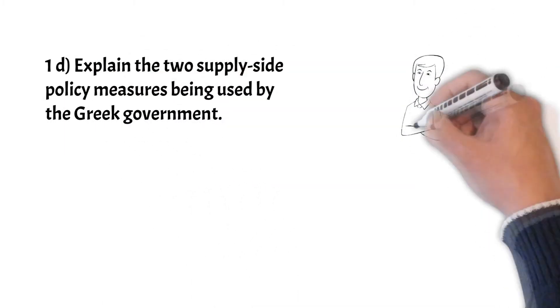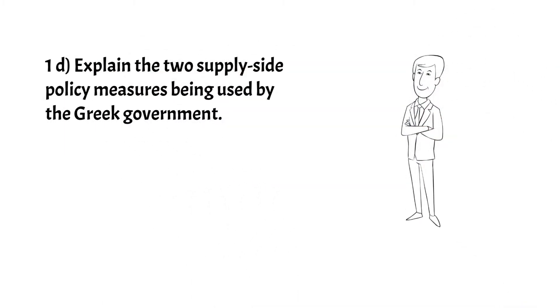Moving on, question 1d: explain the two supply side policy measures being used by the Greek government. Okay, they want us to find something and then explain it. In the second paragraph again they tell us two things. So, labor market reforms—making it easier to hire and fire workers, giving workers more skills to enable them to take various jobs, also making it easier for workers to move from one place to another or one job to another. Secondly, privatization—increasing efficiency due to the profit maximizing motive.